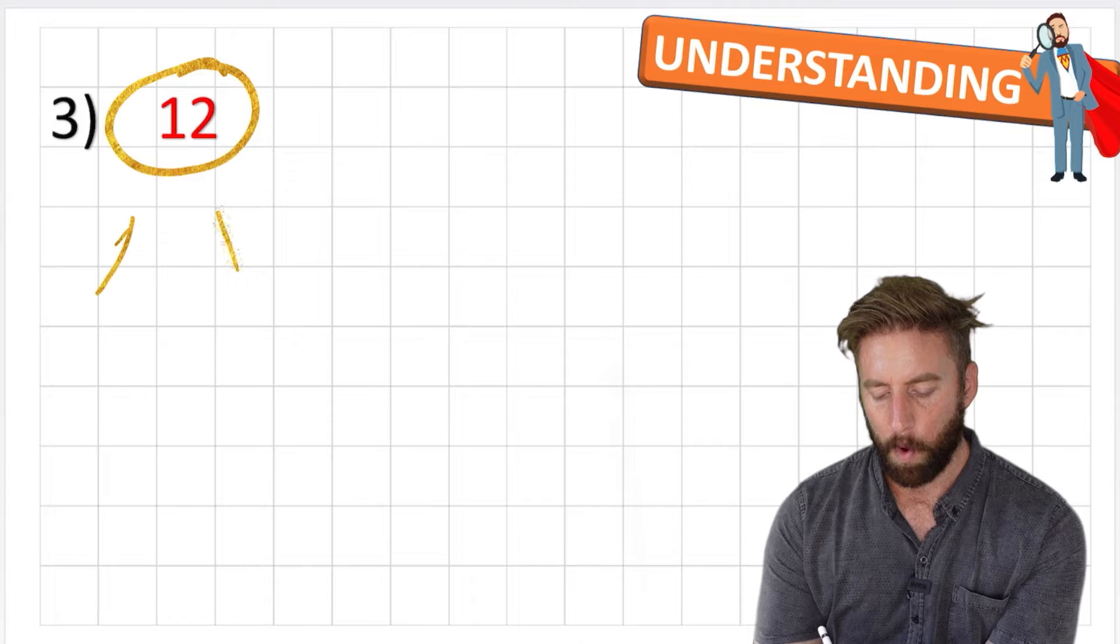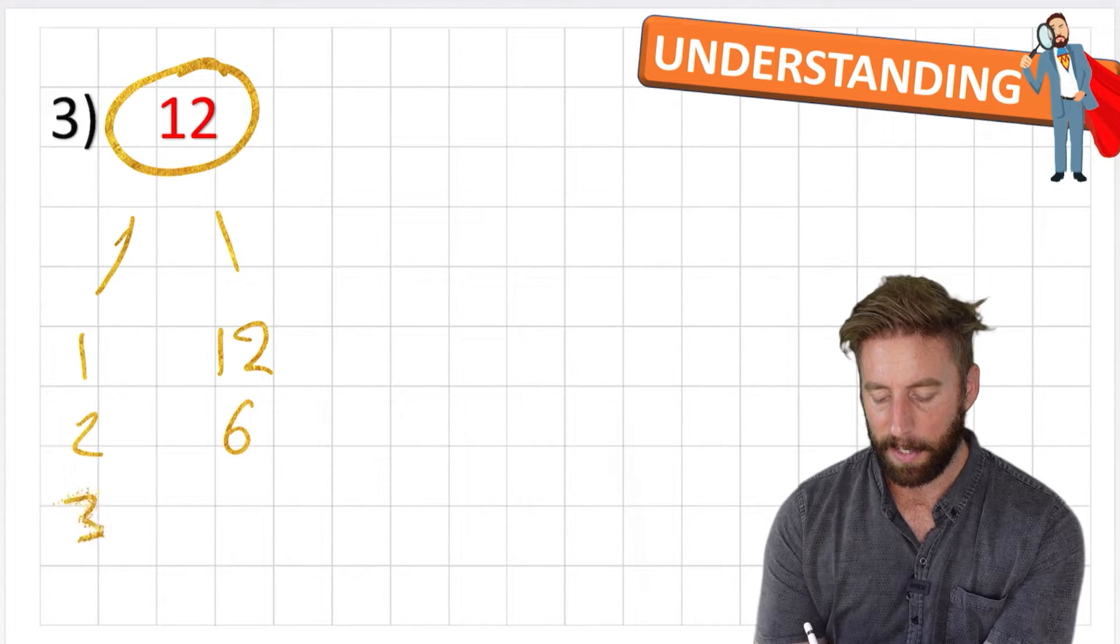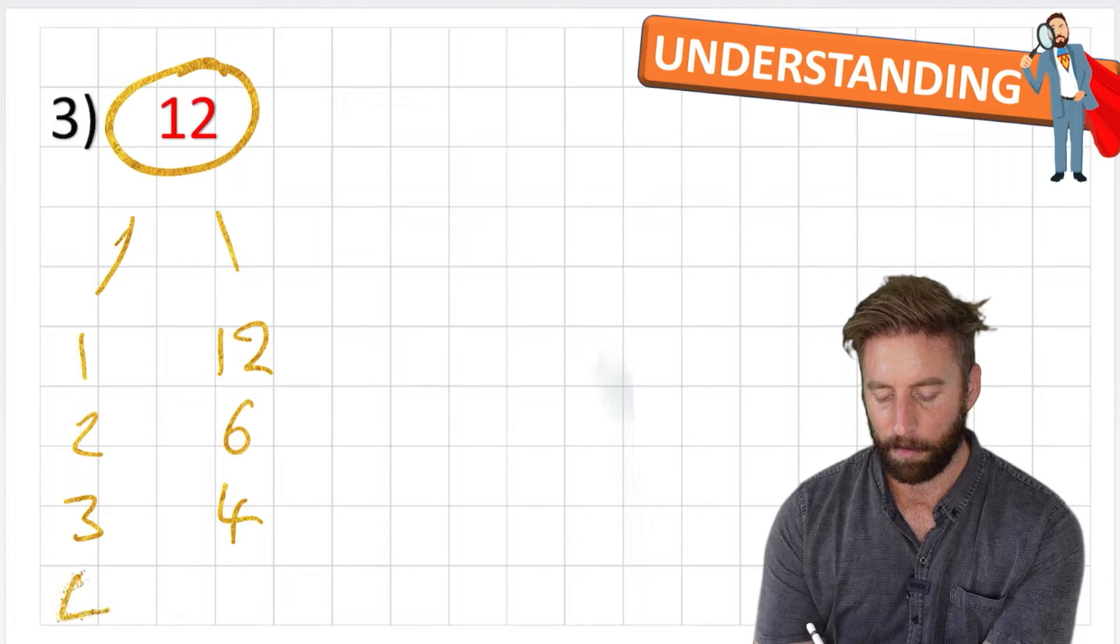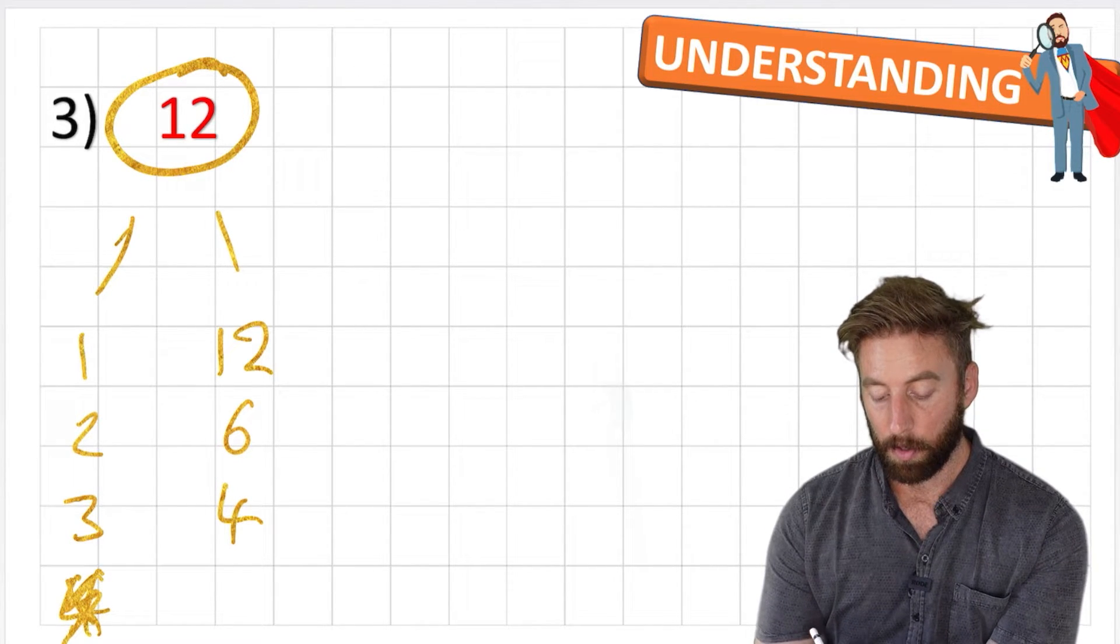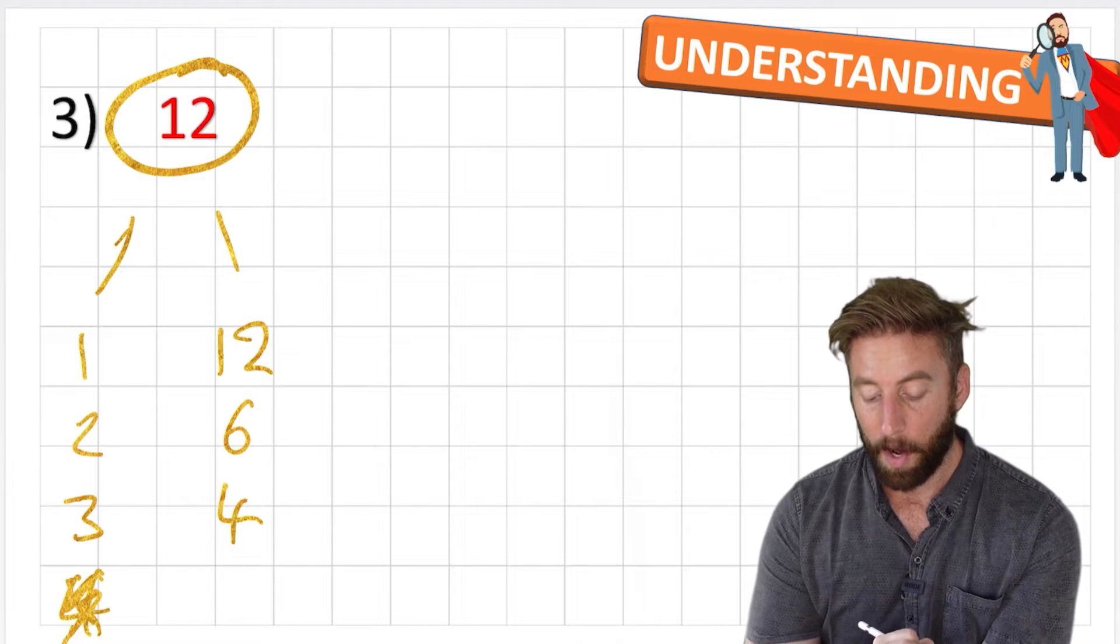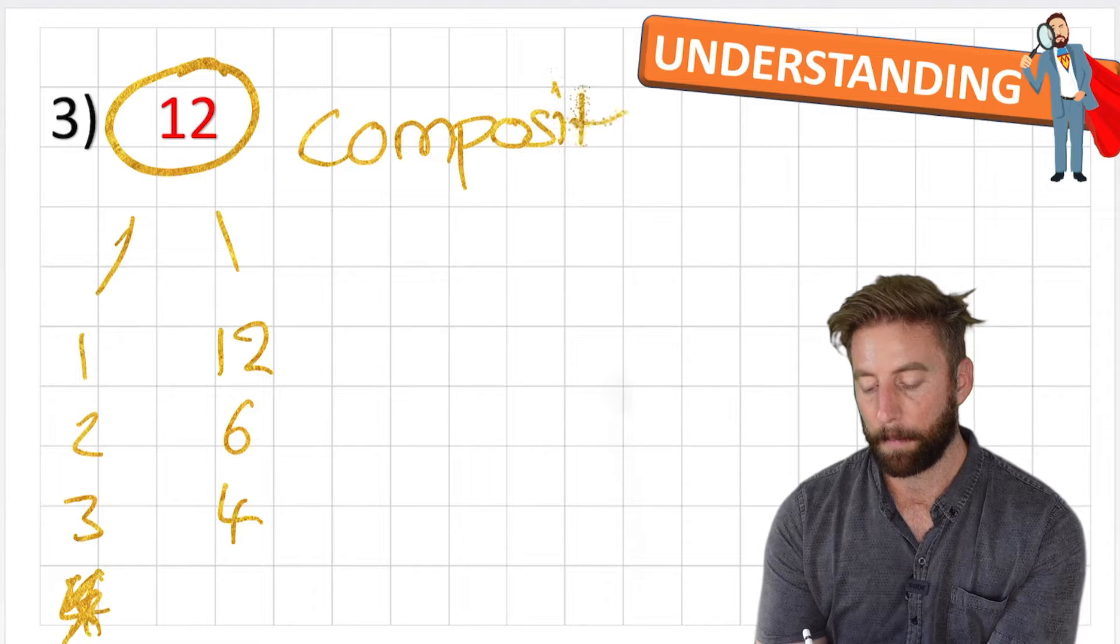So twelve, I can start with one and twelve, two and six, three and four. And then I'm back to four, which means I don't need to do it. So I have six prime numbers: one, two, three, four, six, and twelve. So this is another composite number.